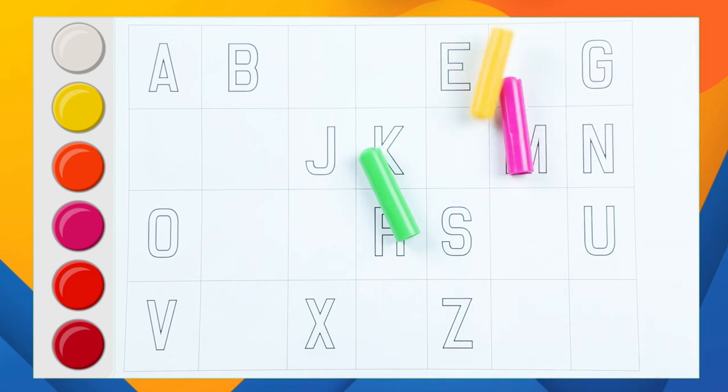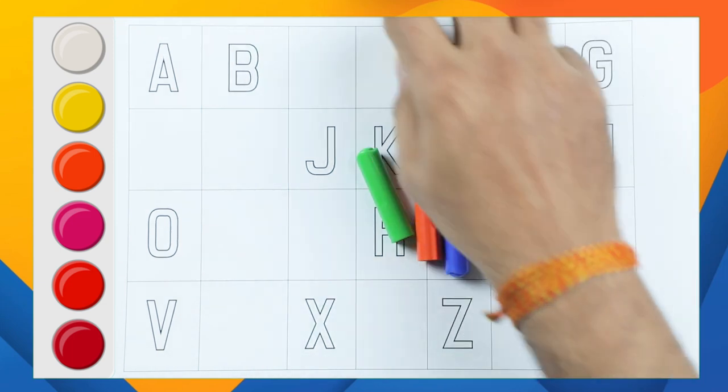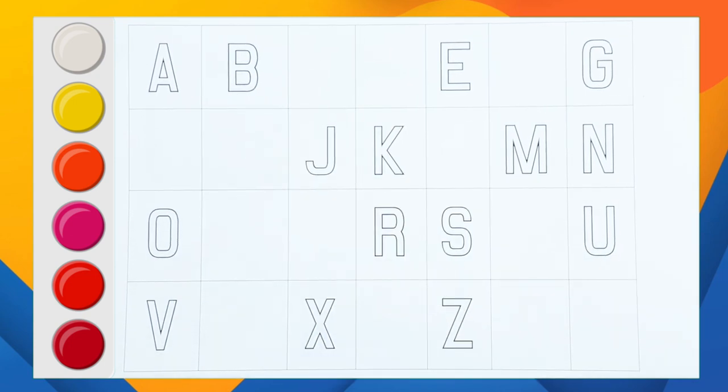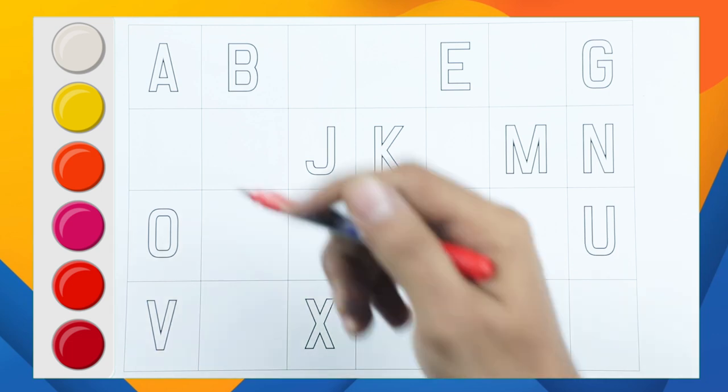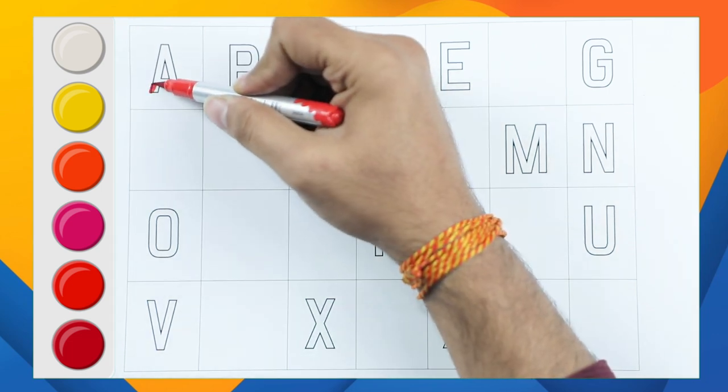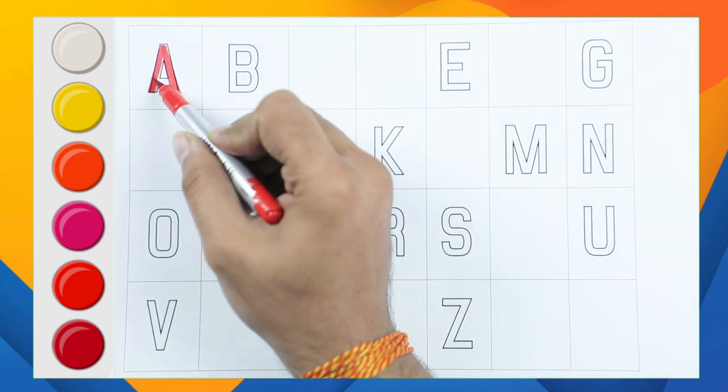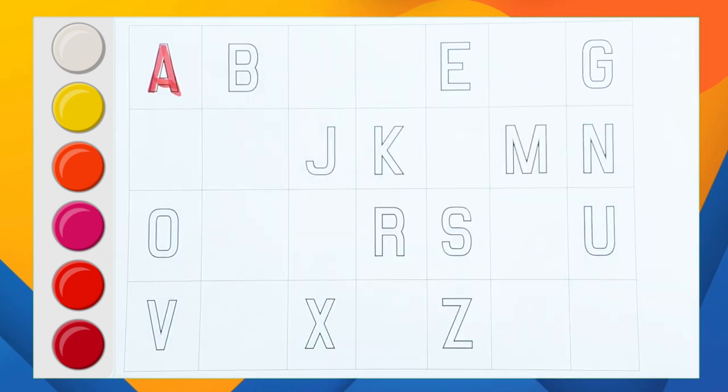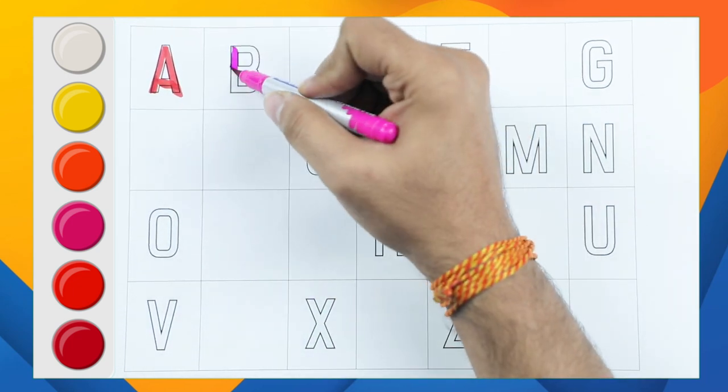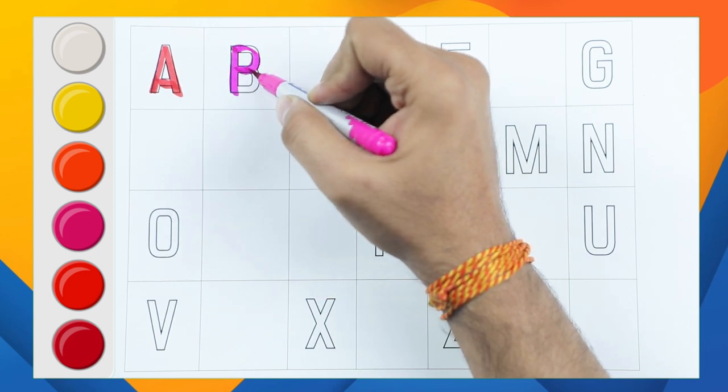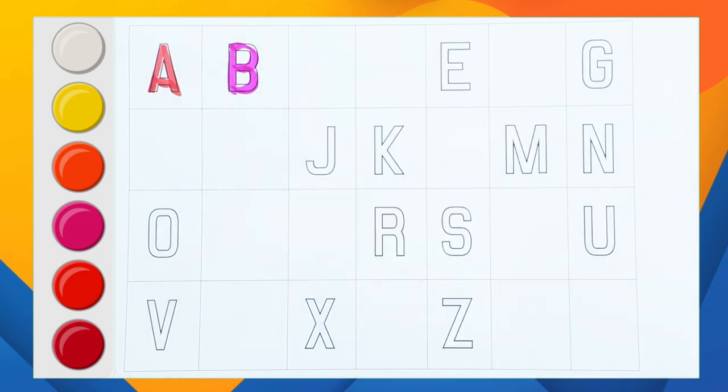It's A, A for apple. B, B for ball. Now what's next letter? Tell me, tell me.